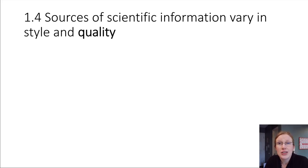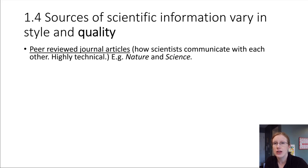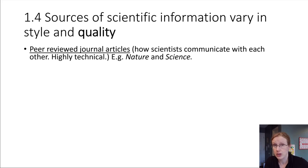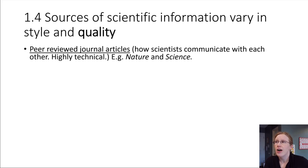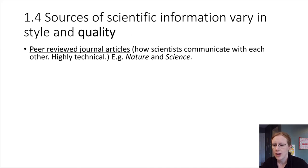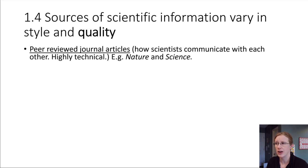At the extreme high-quality end, with the most details, is the type of scientific information included in journal articles. Journals include things like Science and Nature — those are published journals you've probably heard of. The big thing about journal articles is that in order for something to be published, it has to pass a review process. Other people in the same scientific discipline read the article first and vet it for accuracy, to make sure things check out. This is the primary way that scientists communicate with each other and convey information.